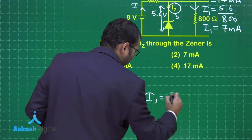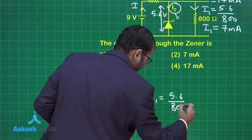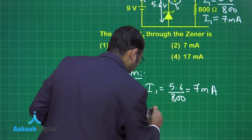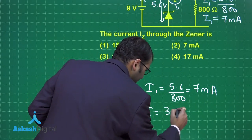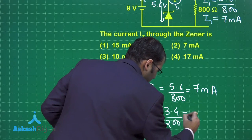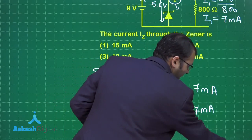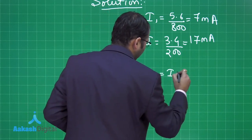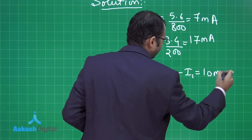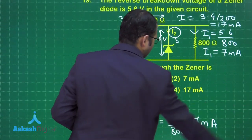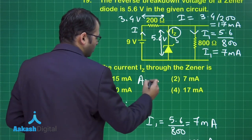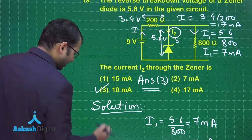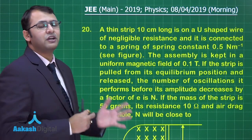For the solution: i1 equals 5.6 divided by 800, which is 7 milliamperes. Then i equals 3.4 divided by 200, which is 17 milliamperes. The remaining current through the Zener diode is Iz equals i minus i1, which equals 10 milliamperes. The answer is option number 3.